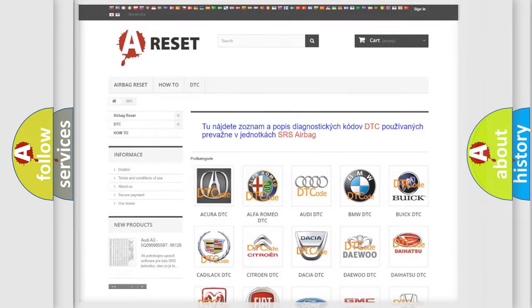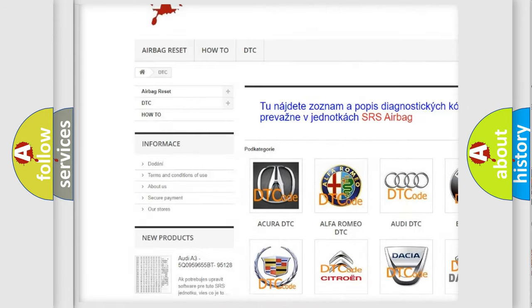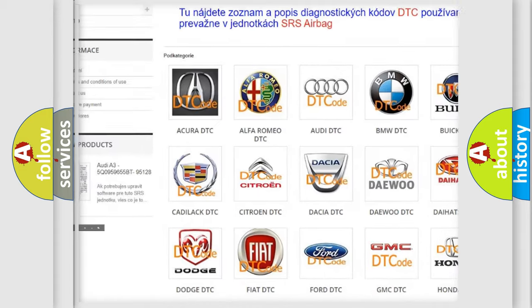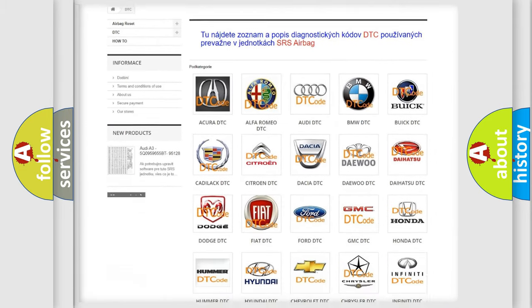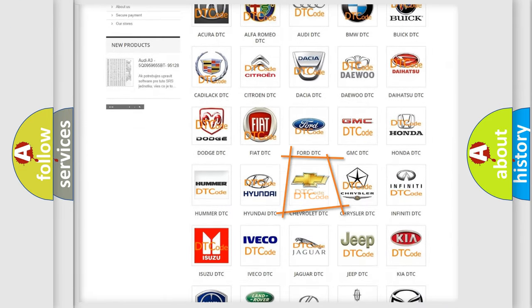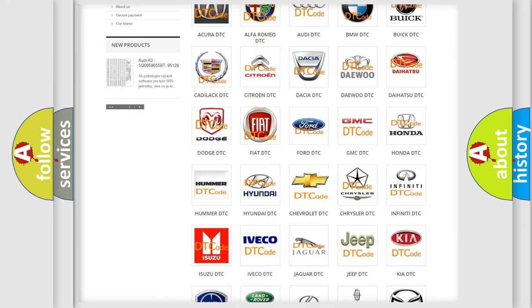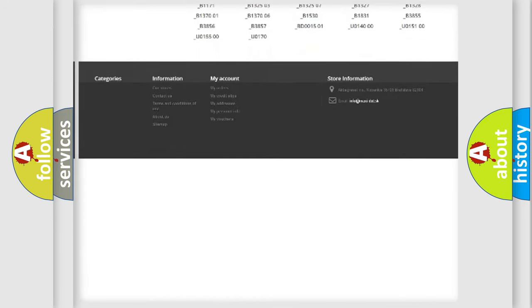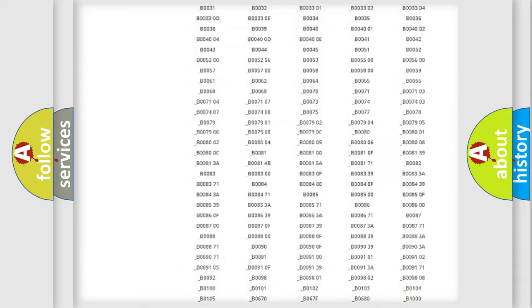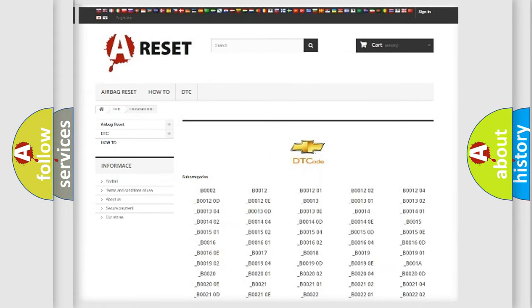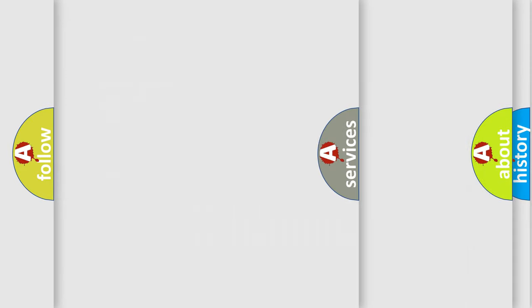Our website airbagreset.sk produces useful videos for you. You do not have to go through the OBD2 protocol anymore to know how to troubleshoot any car breakdown. You will find all the diagnostic codes that can be diagnosed in Chevrolet vehicles, and many other useful things.